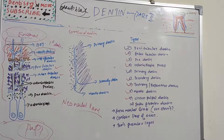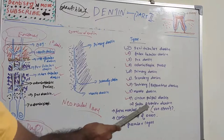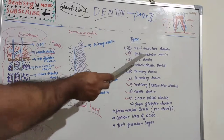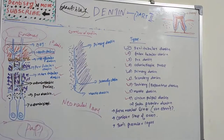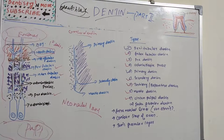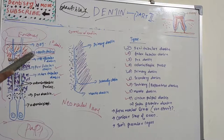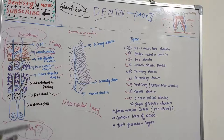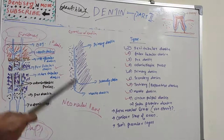Interglobular dentine forms when mineralization of dentine begins in small globular areas that fail to fuse into a homogeneous mass, resulting in zones of hypomineralization between the globules. These zones are called interglobular dentine. It forms in the crowns of teeth in the circumpulpal dentine just below the mantle dentine. In the diagram, interglobular dentine can be seen in the circumpulpal dentine just below the mantle dentine layer.